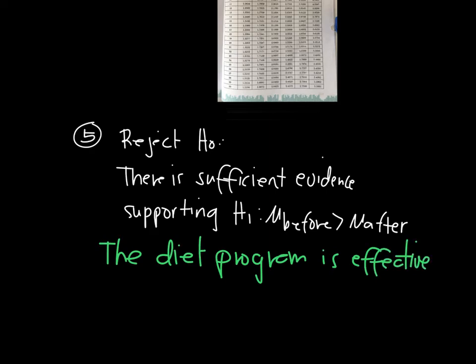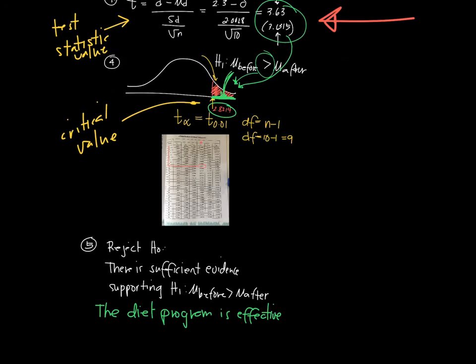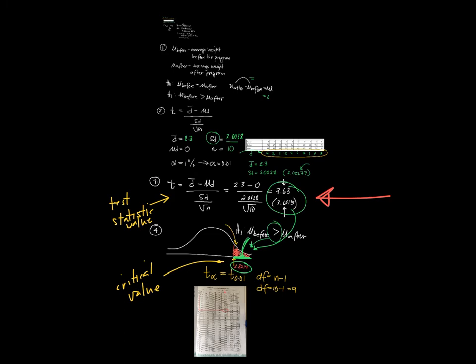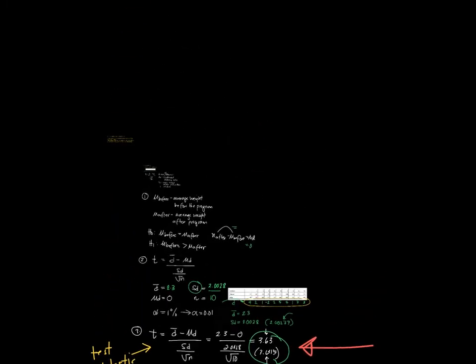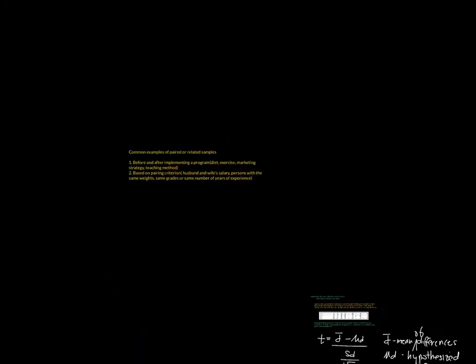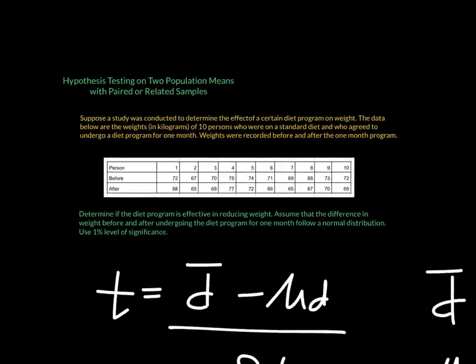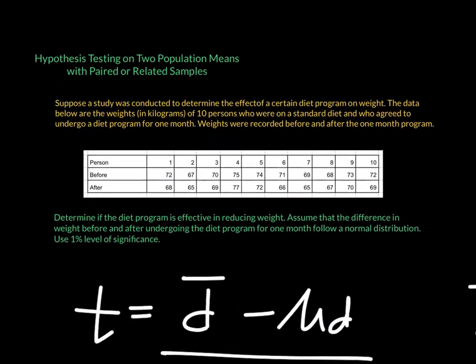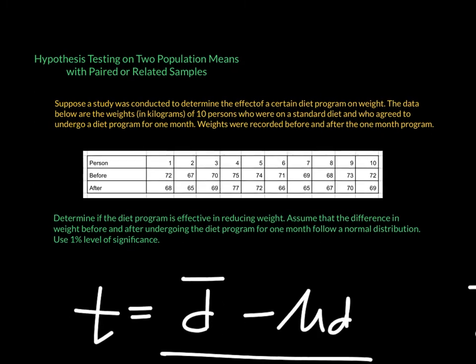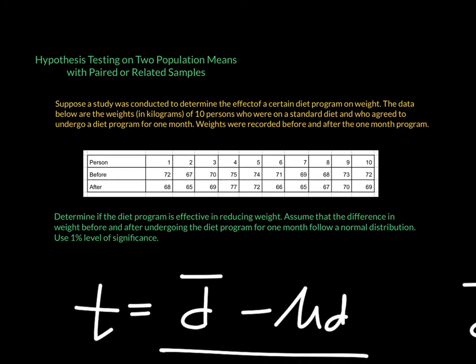I hope you now understand how to perform hypothesis testing when given paired or related samples. The process is the same for all hypothesis testing — you just change the formulas depending on the type of samples or information you have.